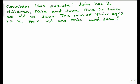So here's the same puzzle. Mia is twice as old as Juan, the sum of their ages is 9. So we're going to use a variable for Mia and a variable for Juan.